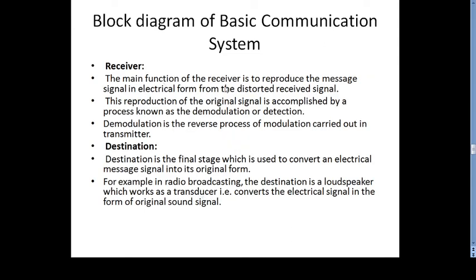The main function of the receiver is to reproduce the message signal in electrical form from the distorted received signal. This reproduction of the original signal is accomplished by the process known as demodulation or detection. Demodulation is the reverse process of modulation carried out at the transmitter. The destination is the final stage, which converts the electrical message into its original form. For example, in radio broadcasting, the loudspeaker acts as a transducer that converts the electrical signal back into the original sound signal — this is an example of a reverse transducer.